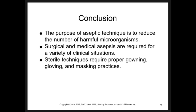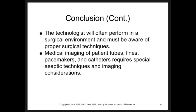The purpose of aseptic technique is to reduce the number of harmful microorganisms. Surgical and medical asepsis are required for a variety of clinical situations, and sterile techniques require proper gowning, gloving, and masking practices. The technologist often has to perform in a surgical environment and will have competencies in the surgery area. You always have to be aware of the patient's tubes, lines, pacemakers, catheters, and urinary bags — be aware of all those considerations, make sure your equipment is clean, and your hands are always washed. Chapter 19 is next.